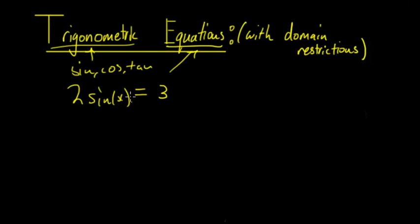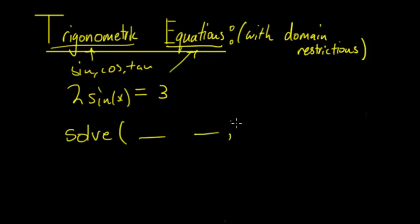On a calculator it's easier — you can put them in using the solve function, entering the left hand side and right hand side, then adding any domain restrictions you want.